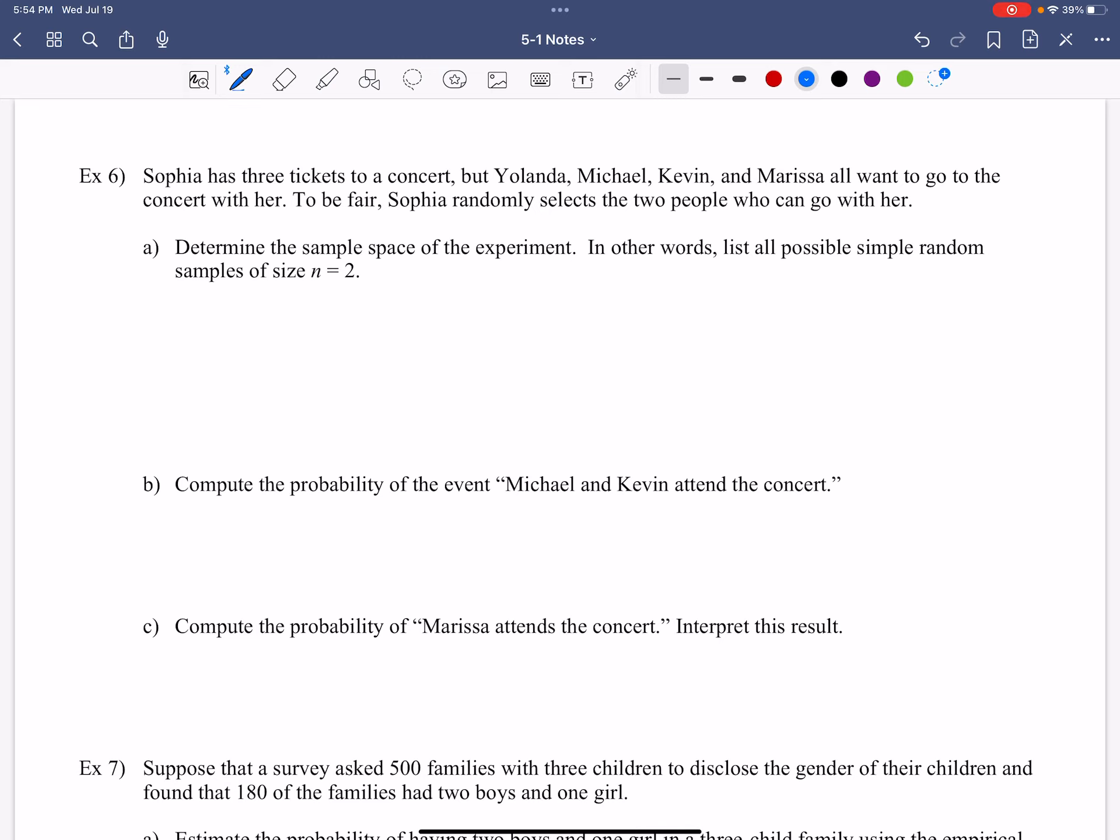But Yolanda, Michael, Kevin, and Marissa all want to go to the concert with her. So to be fair, Sophia randomly selects two people who can go with her. She's got three tickets. Sophia's using one, right? She can take two people with her. We're making the assumption here that they all get along and would be fun at the concert together. So with that being the case, we want to determine the sample space. Remember, that's all possible options. In other words, list all simple random samples of n equals two.